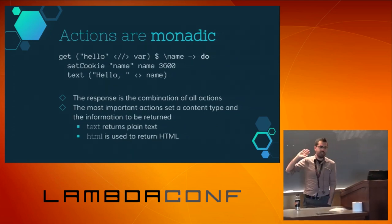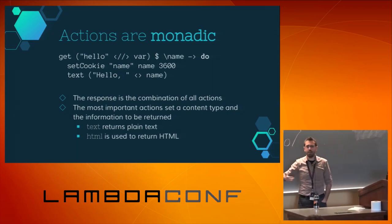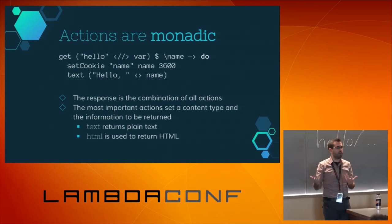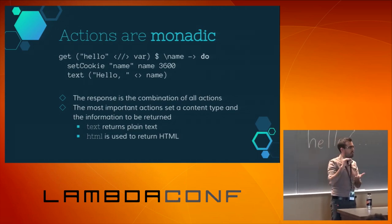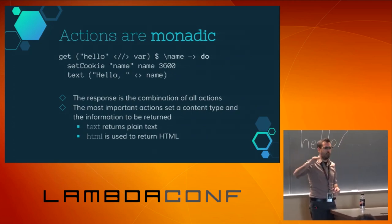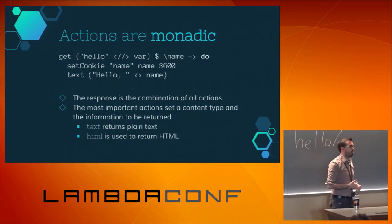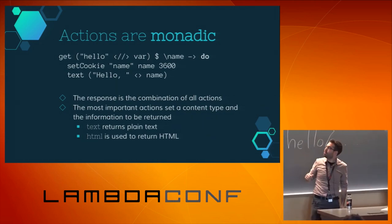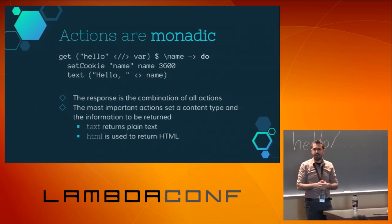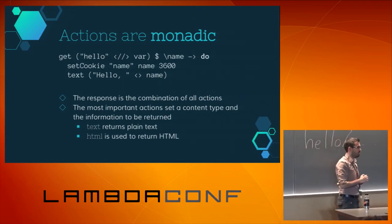Right now the action has just been returning text, but you can perform a lot of different actions. The best thing is to query the documentation for everything you can do. What is important is that all these actions form a monad, which means you can sequence them one after the other. For example, you can set a cookie and then return text. You can also redirect, set the content type, or any kind of header.